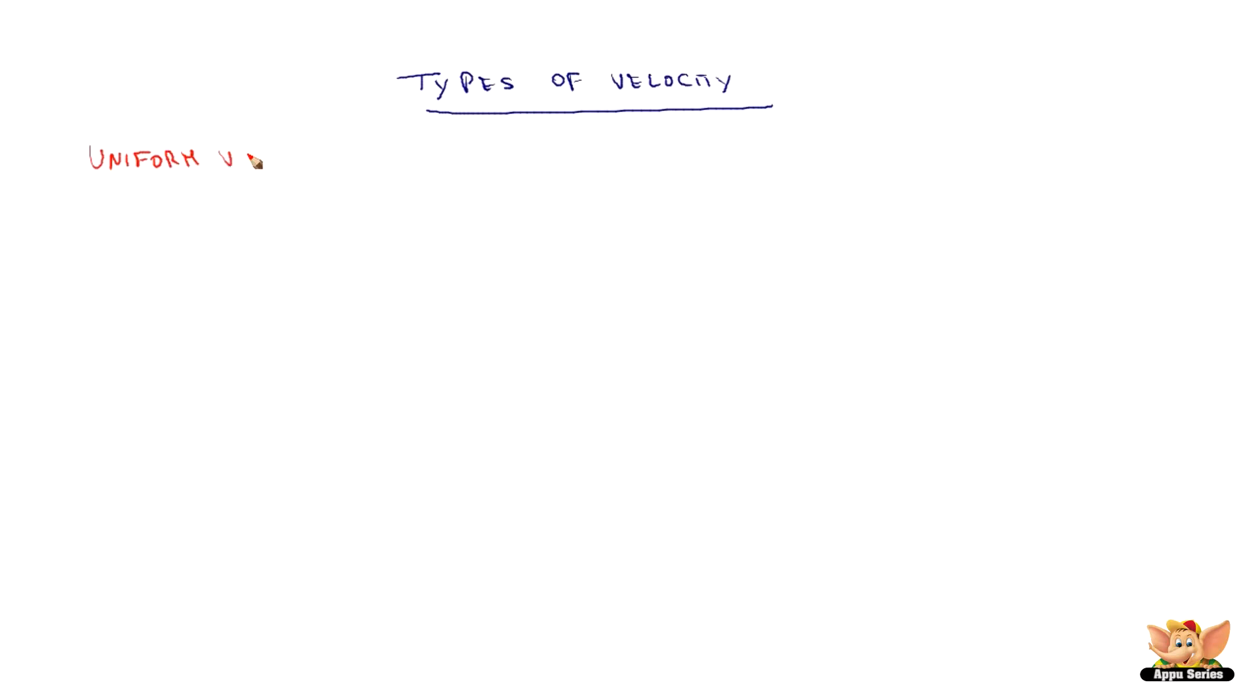If we take uniform velocity wherein the velocity is constant, it is also called constant velocity.